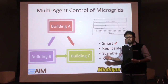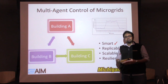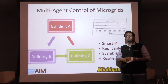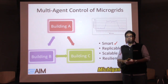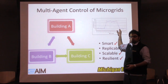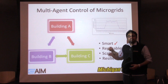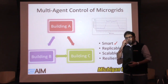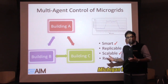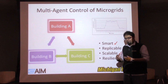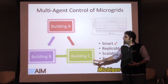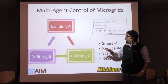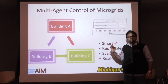Each building is rather self-sufficient, self-contained. But it turns out that when you use a large machine to power small loads, it is incredibly inefficient. So it would make sense to have one machine in one building power all the other buildings during periods of low consumption.